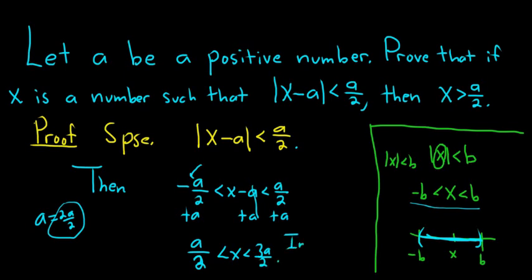So in particular, this means something. It means we're done. If you look at this, we have x greater than a over 2, just reading it backwards. So that's it.